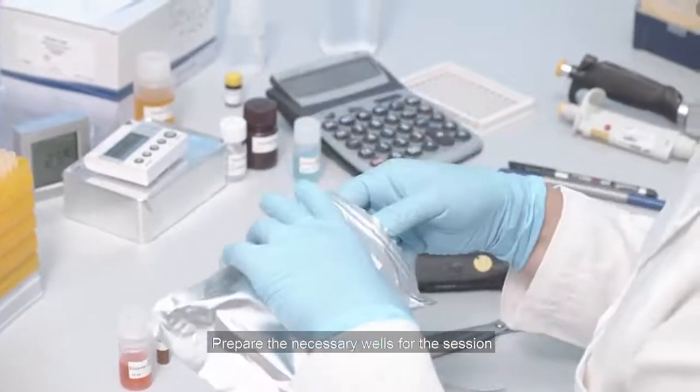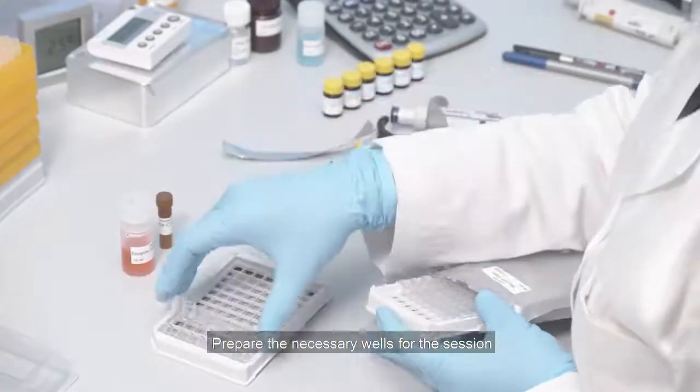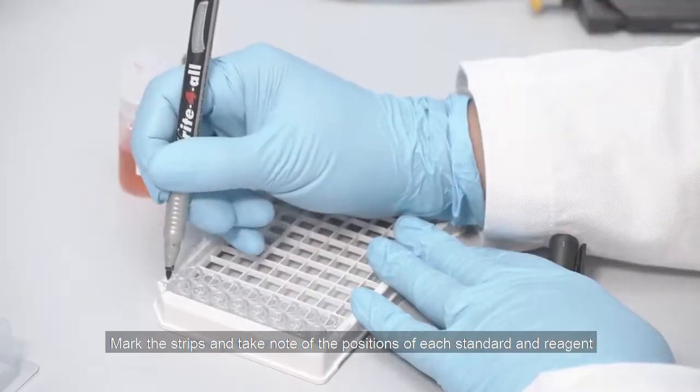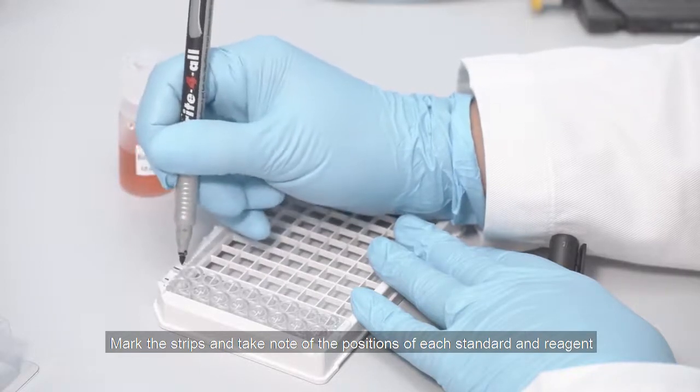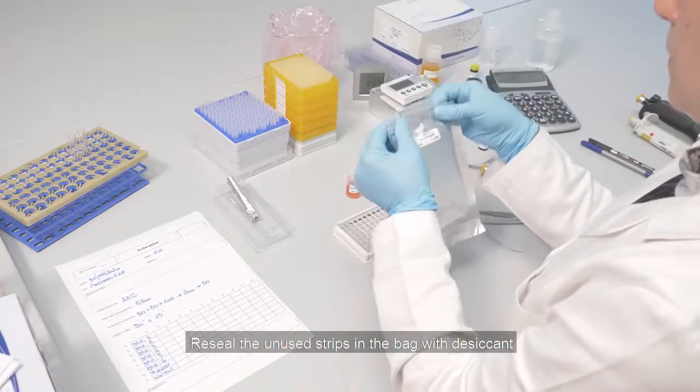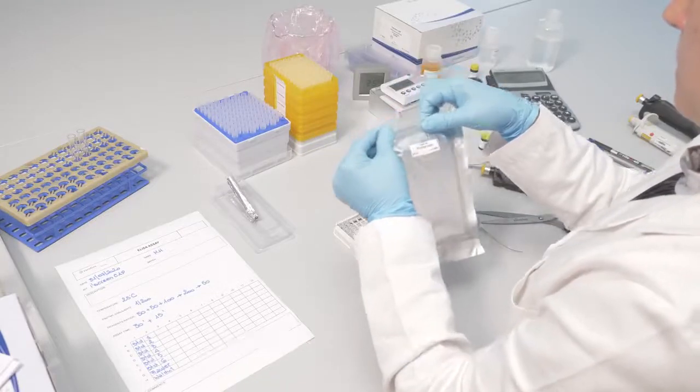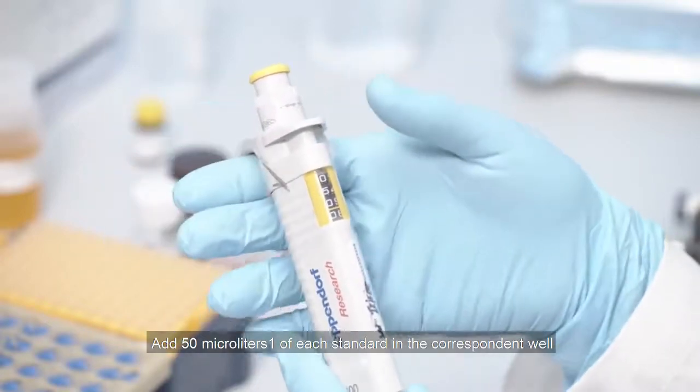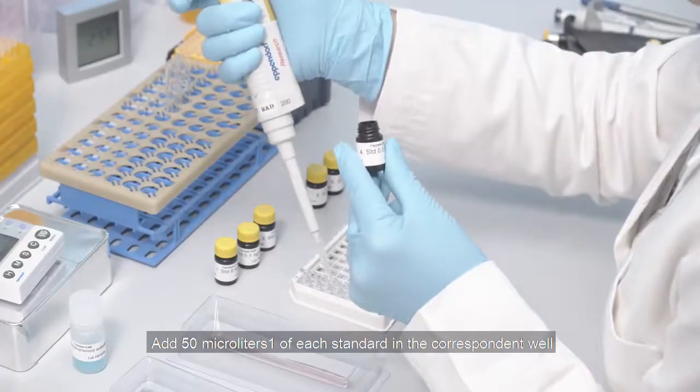Prepare the necessary wells for the session. Mark the strips and take note of the positions of each standard and reagent. Reseal the unused strips in the bag with desiccant. Add 50 microliters of each standard in the corresponding wells.